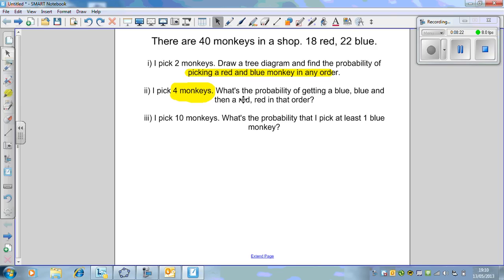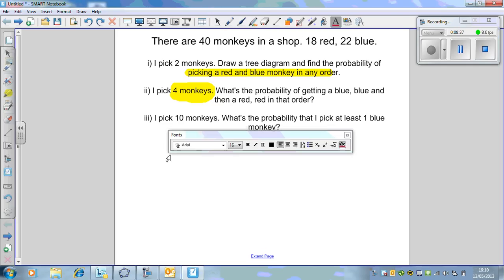So that is not the way we're going to deal with this. What's the probability of picking blue, blue, then red, red in that order? This is not too bad. We're going to get a blue first, 22 out of 40. Then multiply by another blue, 21 over 39. Then multiply by red, 18 out of 38.